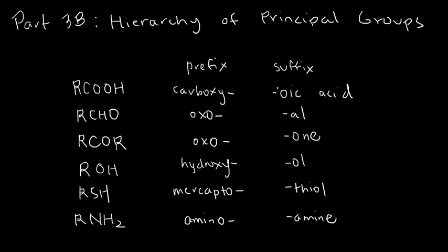Here is a table — a partial one — showing the most common functional groups and principal groups we have used in many cases before, arranged by rank or hierarchy. For example, carboxylic acids have the highest rank of all, followed by aldehydes, then ketones, then alcohols, then thiols, then amines.